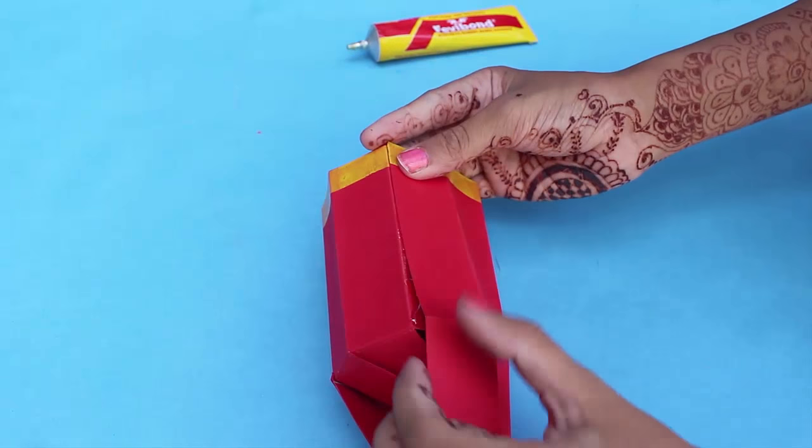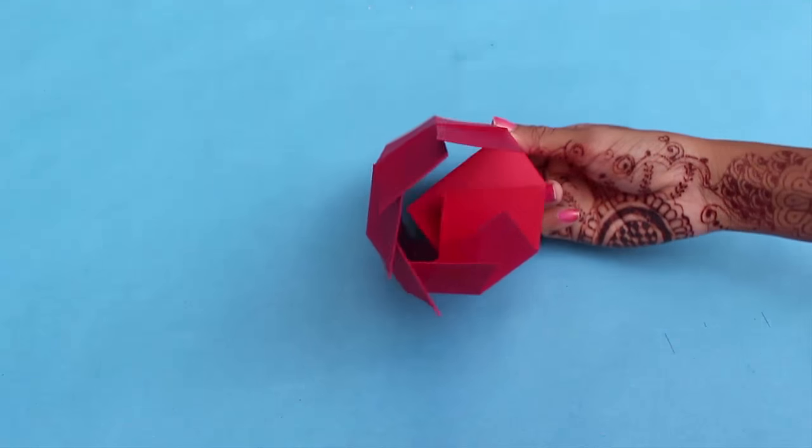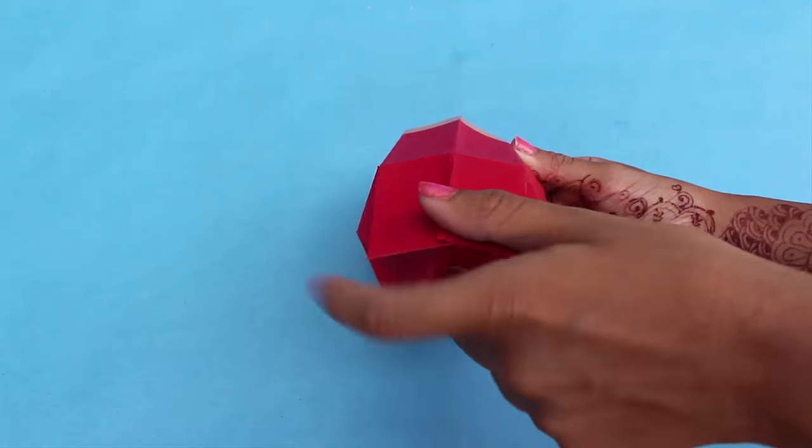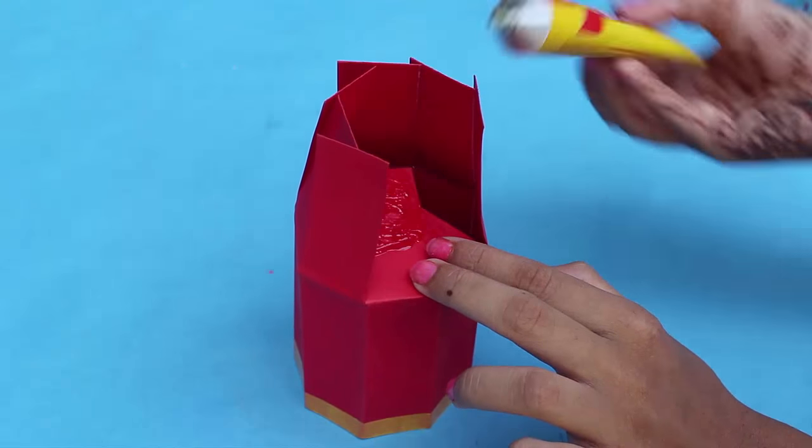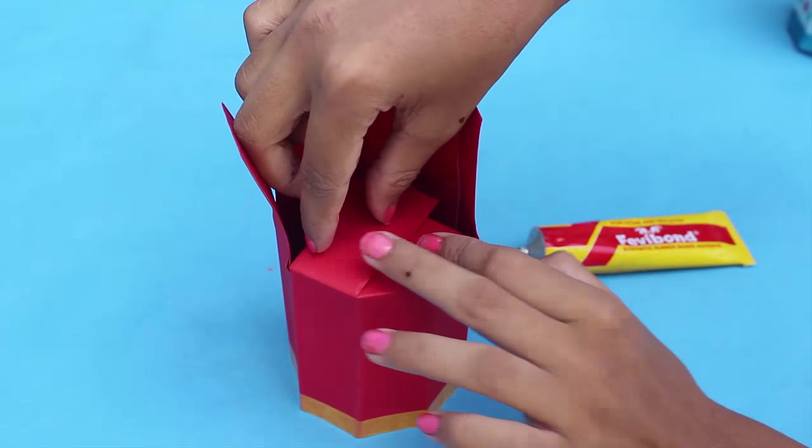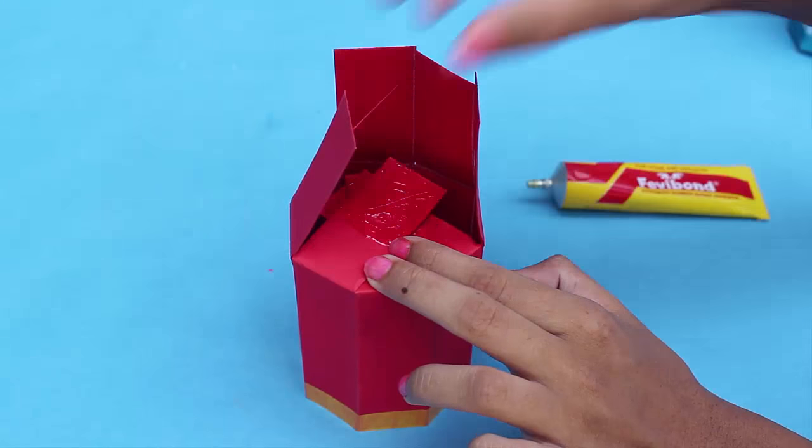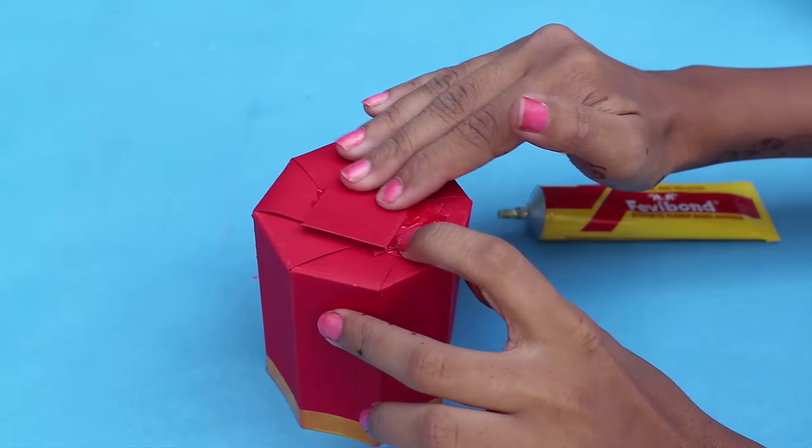While sticking the base, make sure that you overlap all the strips one above the other and start sticking it. Now apply glue on each strip and then stick the other over it.